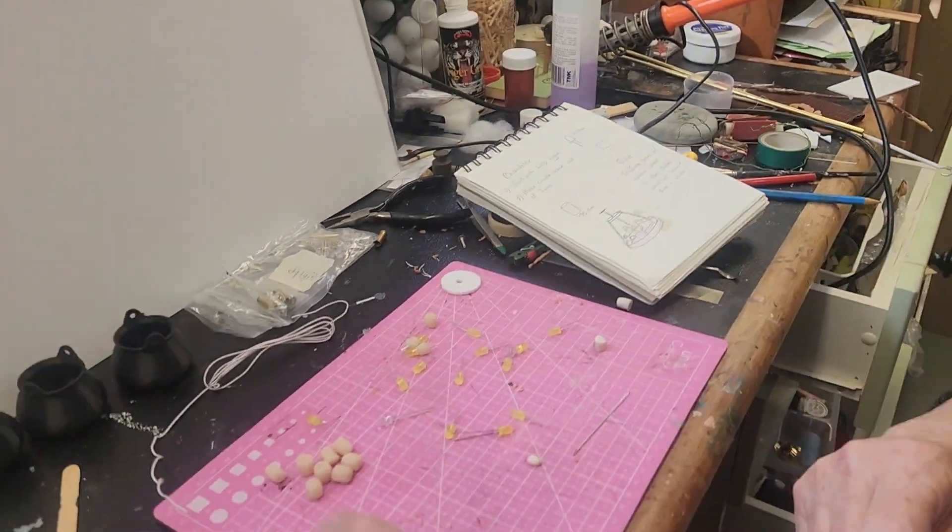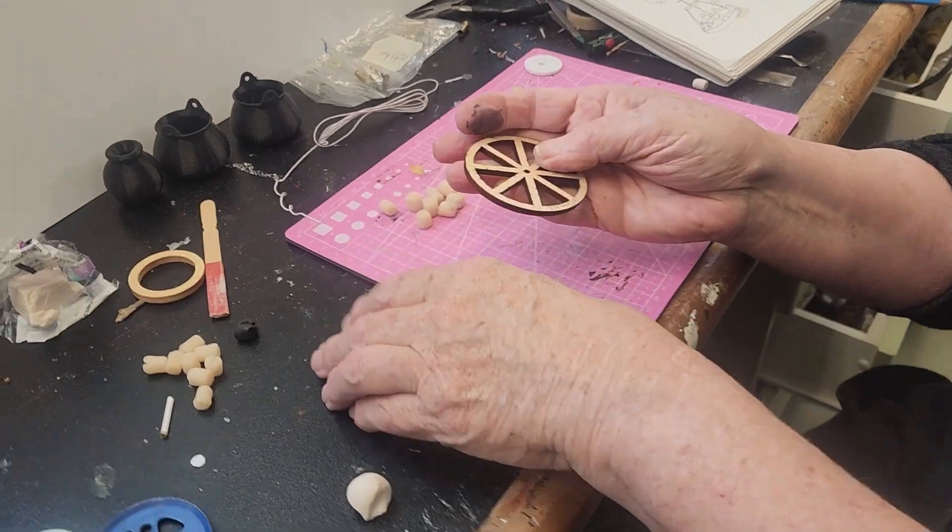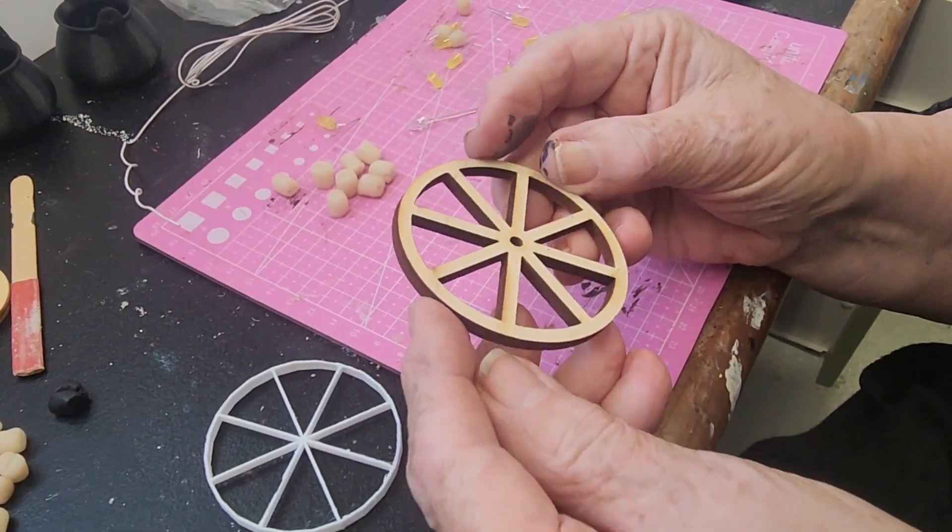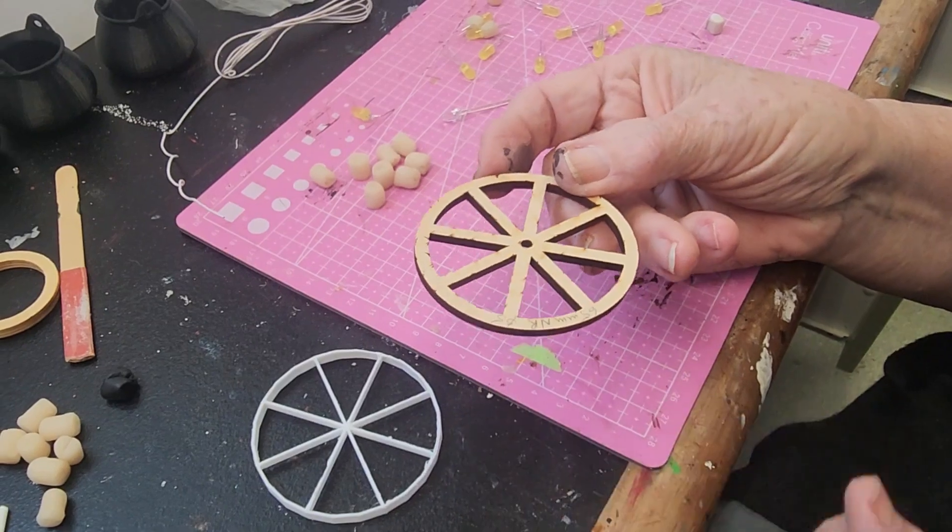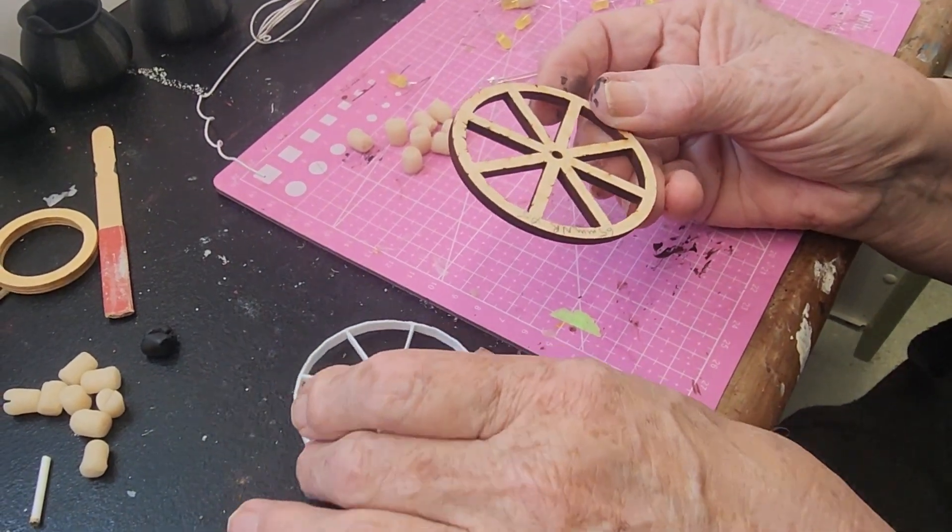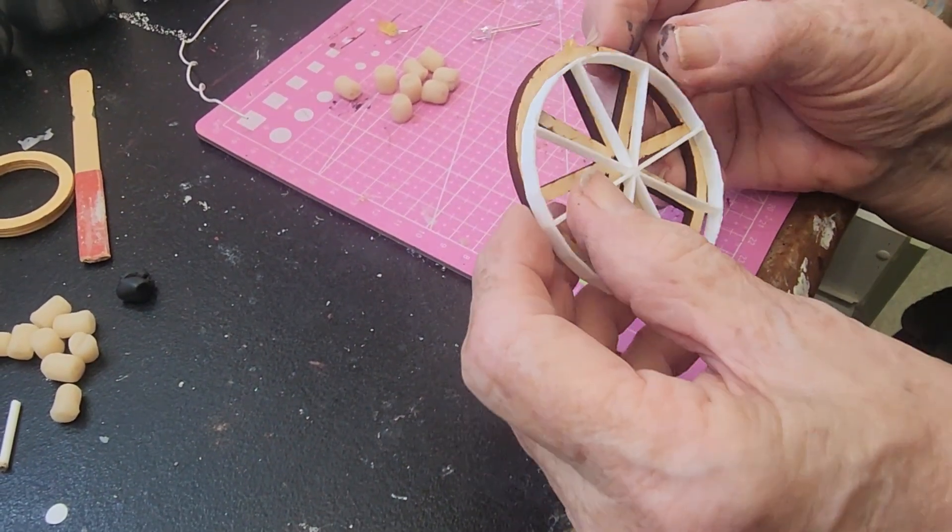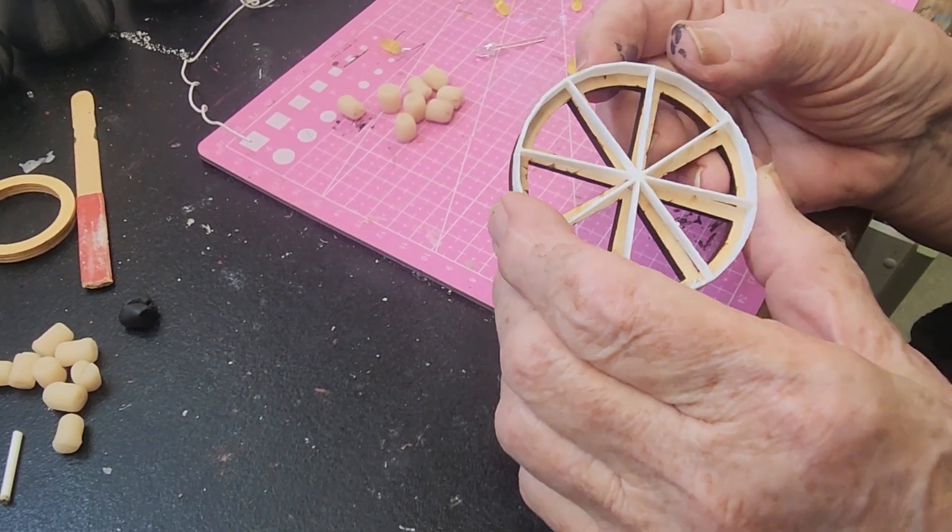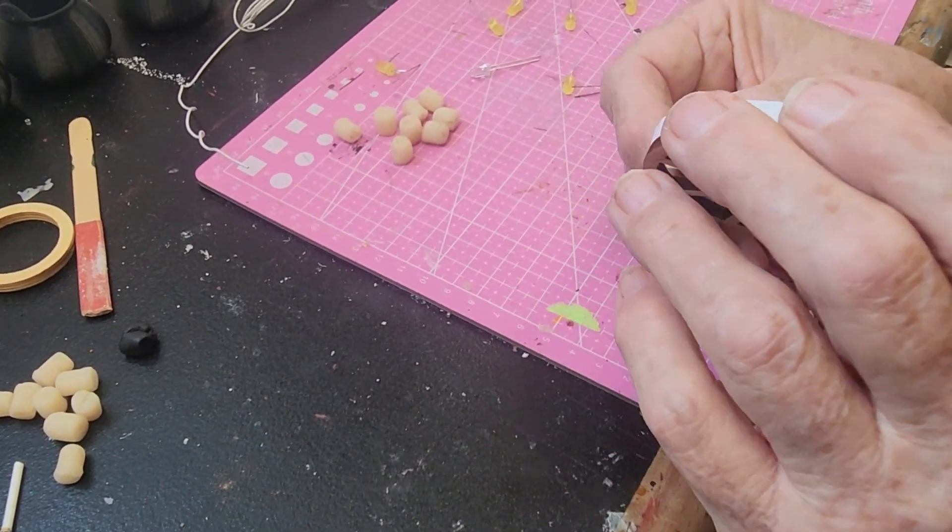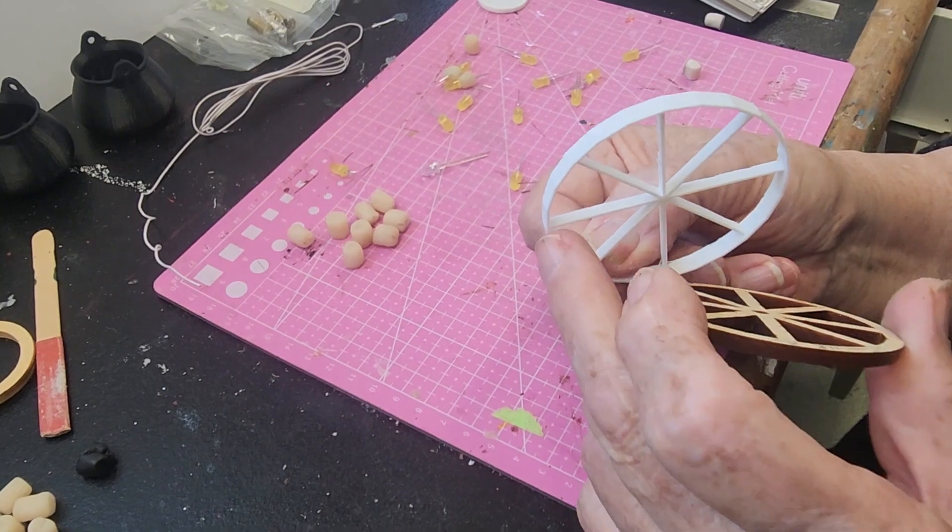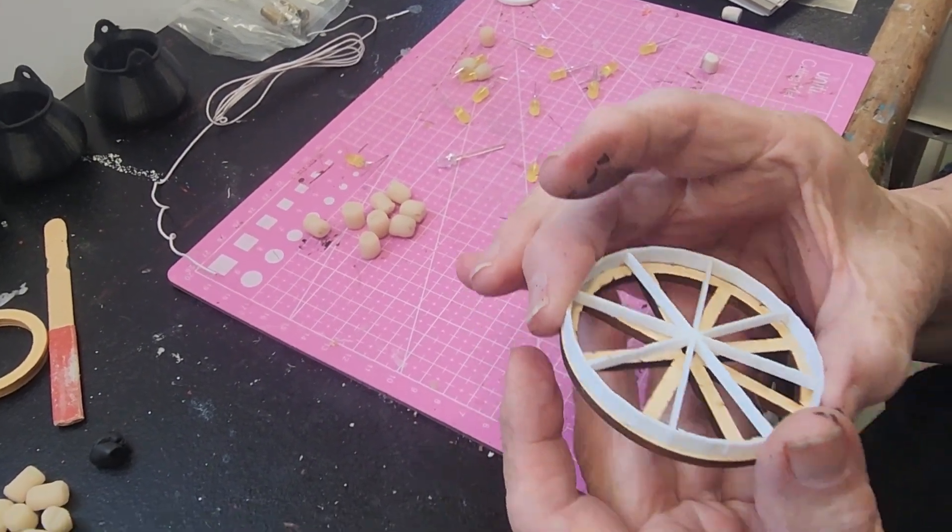What I've started with is a wooden wheel which is 85 millimeters in diameter—this was a laser-cut one that I bought. Then I 3D printed one which is only two millimeters thick, and the spokes don't go right to the end edge of the rim, so there's a space. That's really important because that's where the wiring will go underneath the spokes.